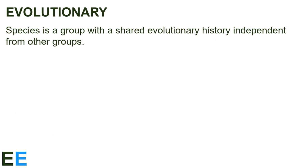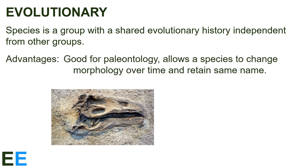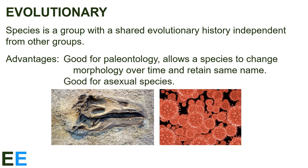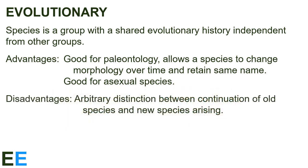Our last species definition is called the evolutionary species definition. A species is a group with a shared evolutionary history independent from other groups. This definition focuses on what it is that makes species in the first place — it's the independent evolutionary history that leads to phenetic differences, shared synapomorphies, and separate breeding pools. This definition has several advantages. First, it's good for paleontology since it allows the species to change morphology over time and retain the same name, unlike the phenetic definition that might require name changes as morphology changes. It's also obviously better for extinct species than the biological species definition. Second, this definition works for asexual species where the biological species definition doesn't apply. Strains of bacteria or viruses that remain similar due to shared environments and histories can be classified in the same species, even though none of them mate with one another. However, this definition also has disadvantages. Although it's good that it allows a species to change over time and retain the same name, there's an arbitrary distinction between the continuation of an old species and a new species arising. At what point did Homo sapiens become Homo sapiens instead of retaining the name of one of our ancestors? The real problem with this definition is that we're back to ambiguous terminology again.